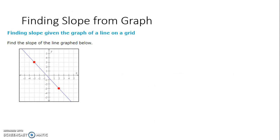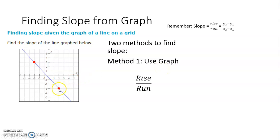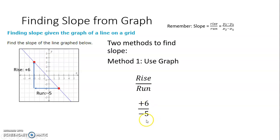Now from a graph, you can calculate slope two different ways. You can do rise over run, or you can use the subtraction formula. Looking at our graph, I think rise over run is the simpler method. So using the graph, I'm going to pick a starting point and run to the left — that's negative 5, because counting left is negative. Then our rise is up 6. So rise over run is 6 over negative 5. We can't simplify that because there are no common factors. That's our answer.